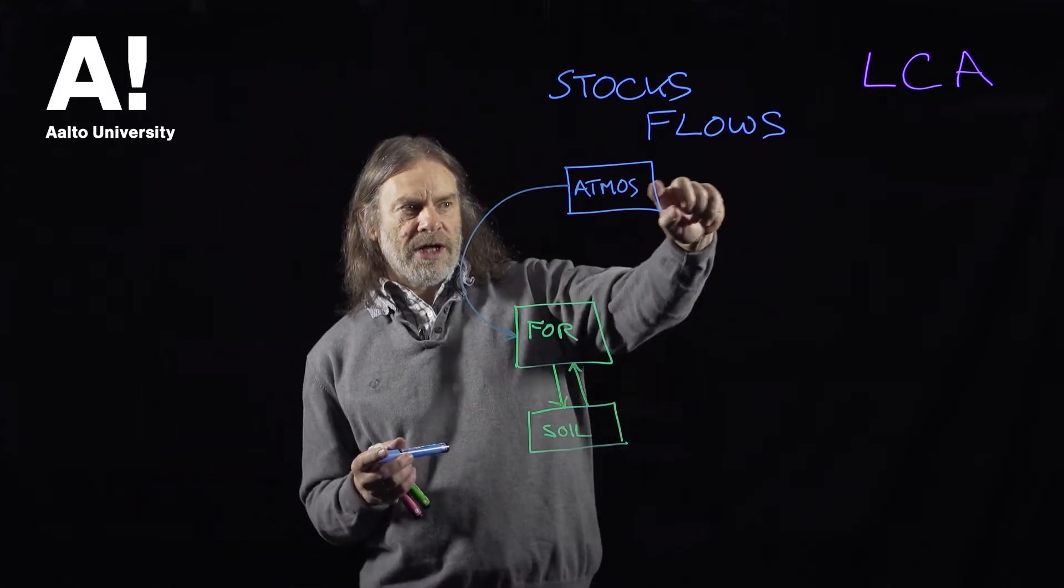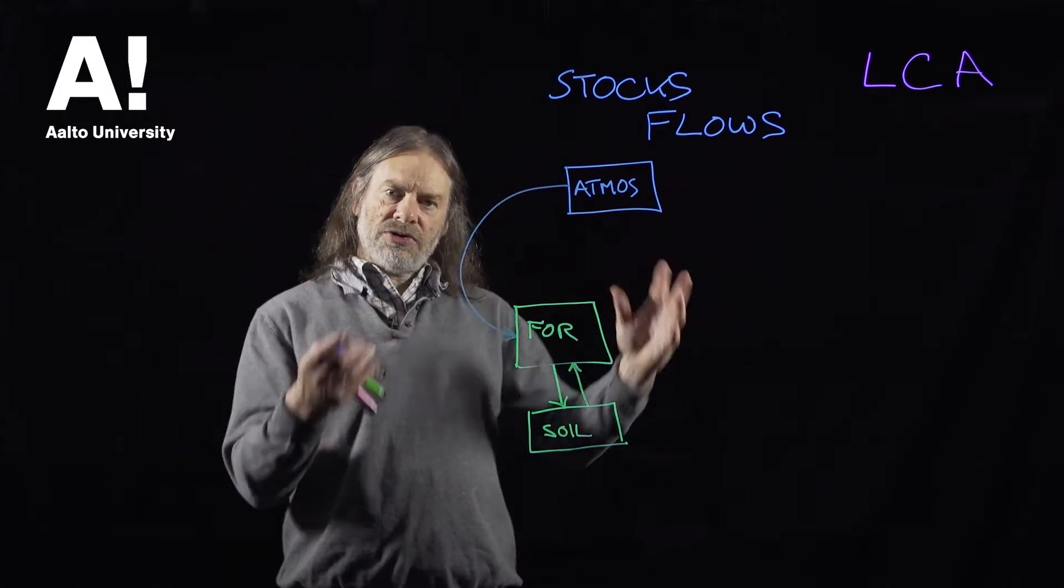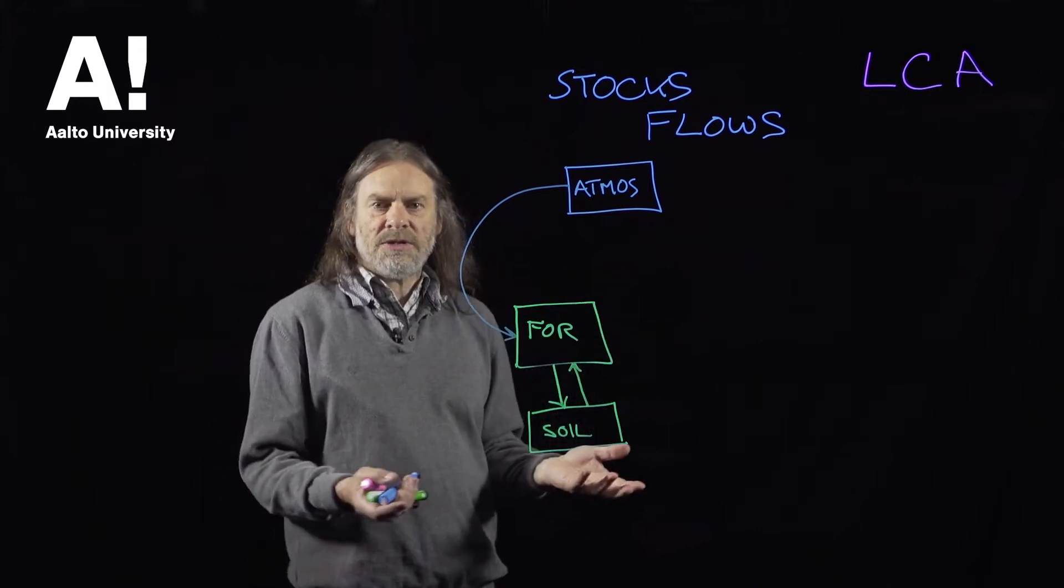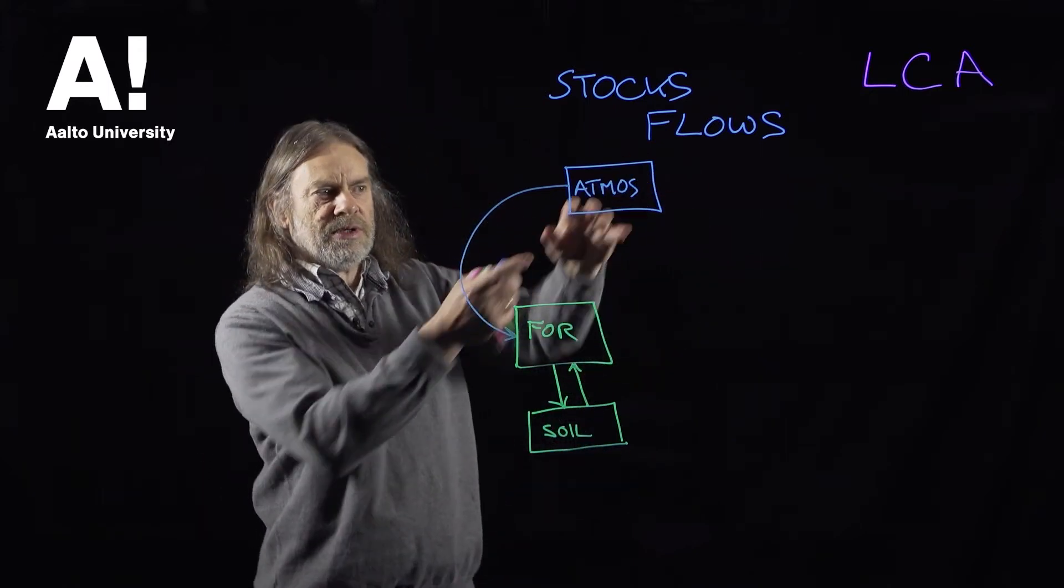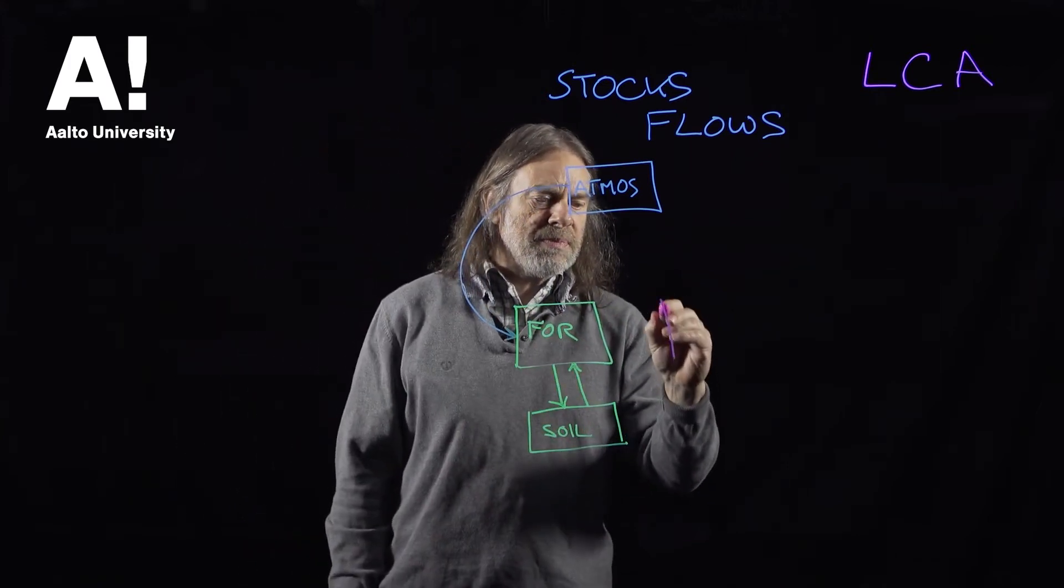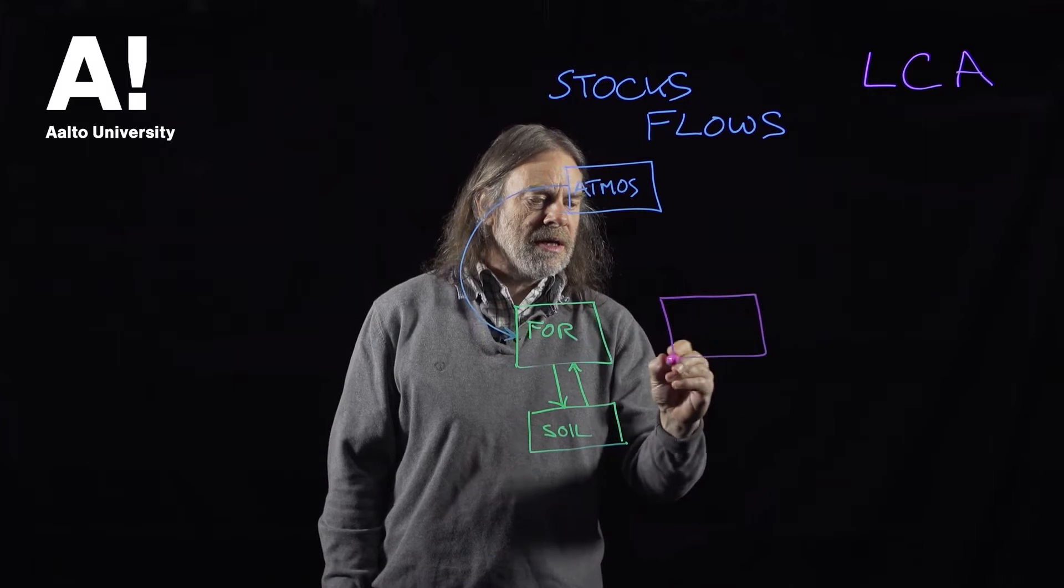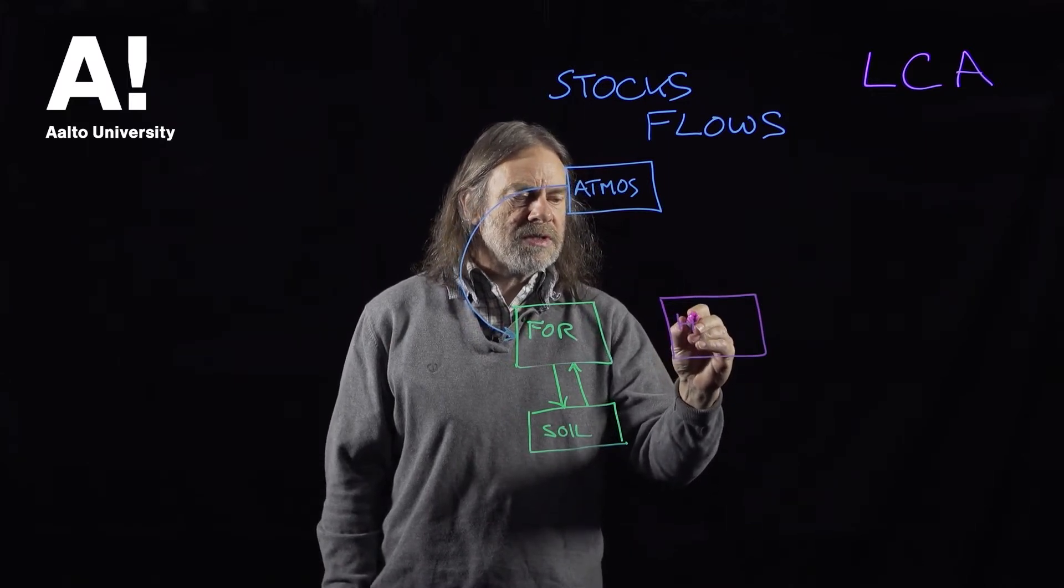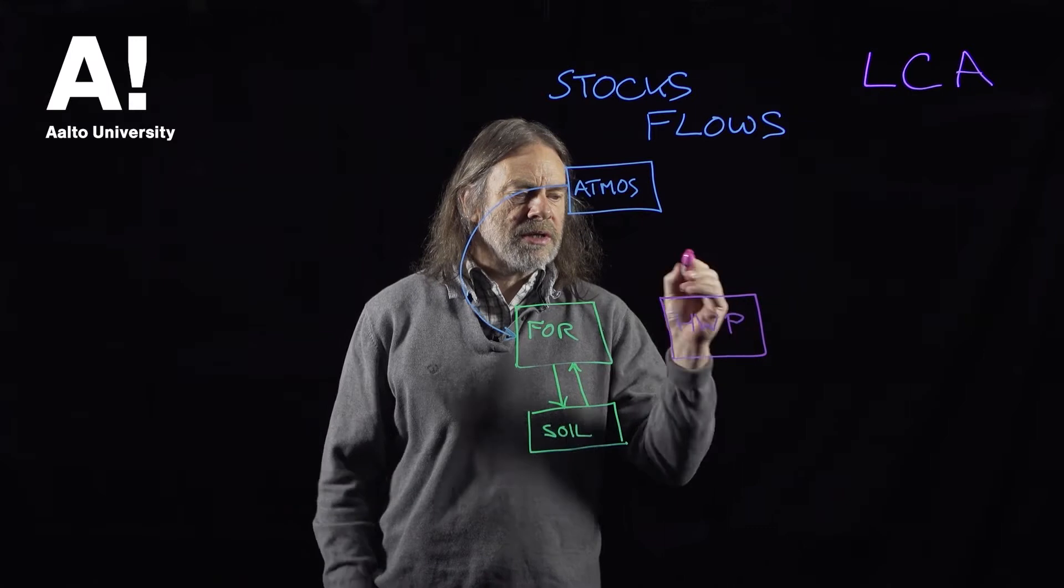And rather than draw that line where the trees are decaying, carbon dioxide is being given off by aerobic respiration and the carbon dioxide is returning to the atmosphere, we will put another box in there and we will call that harvested wood products.